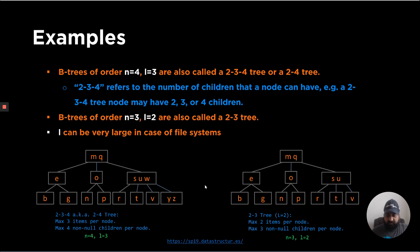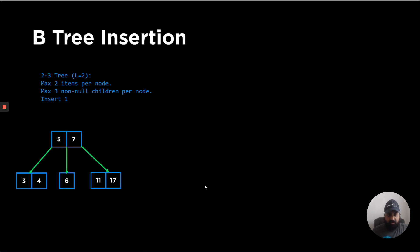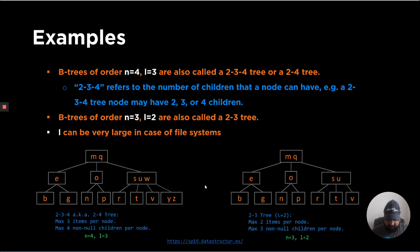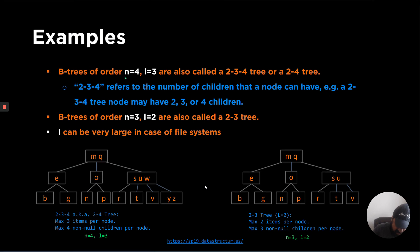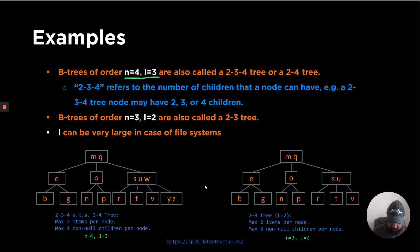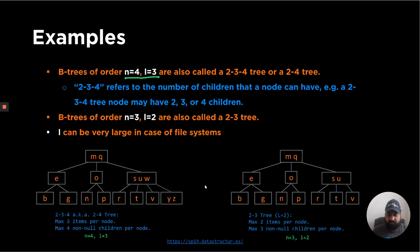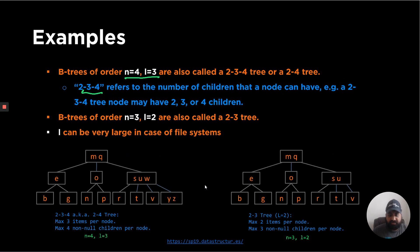Before discussing insertion, let's look at commonly used B-trees. A B-tree of order N equals 4 and L equals 3 is called a 2-3-4 tree or a 2-4 tree. This is a common convention — the name refers to the number of children a node can have, so a 2-3-4 tree can have either 2, 3, or 4 children.